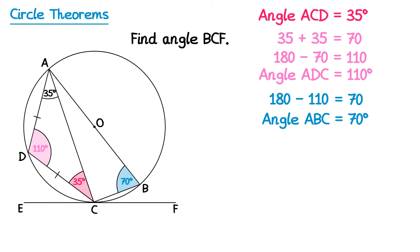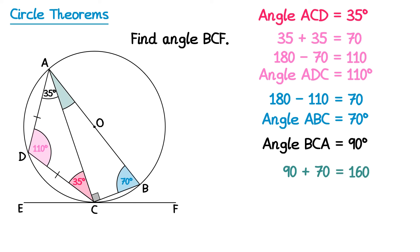Next, notice how the line AB goes through the centre of the circle, which means it's the diameter. The second theorem tells us that the angle in a semicircle is always 90 degrees, so angle BCA is a right angle — 90 degrees. Now staying inside triangle ABC, we can find the remaining angle at the top: 90 plus 70 is 160, and 180 minus 160 is 20 degrees. So angle CAB is 20 degrees.